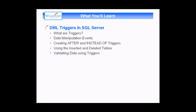We'll then look at the data manipulation events that you can attach your triggers to, and show you the difference between an after trigger and an instead of trigger. When we've covered the basics, we'll look at how you can use the inserted and deleted tables to get access to the data that your triggers might work on. Finally, we'll show you a practical example of using triggers and inserted tables to validate data being added to your database. So let's get started.